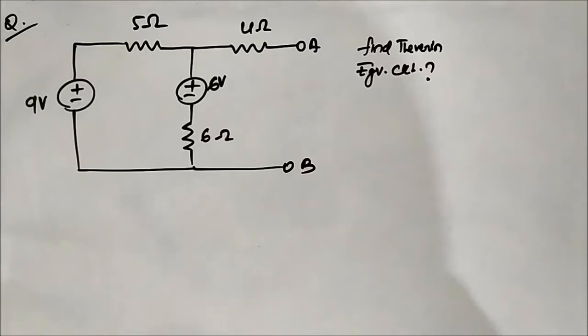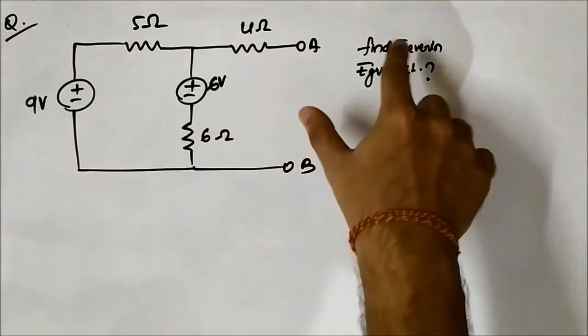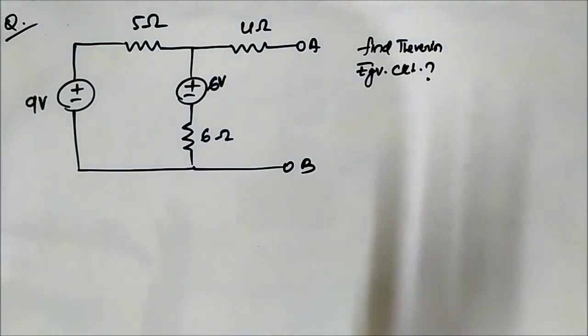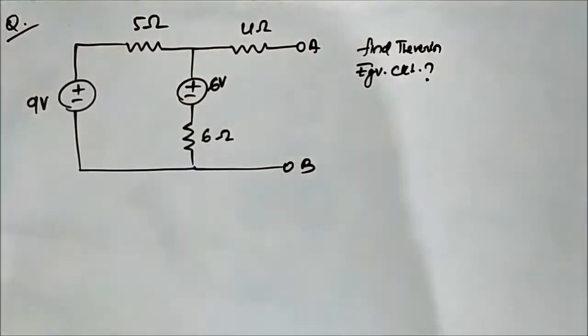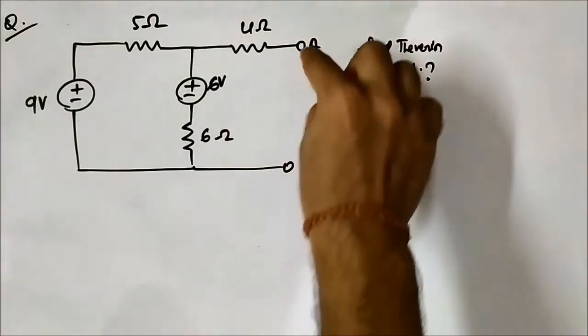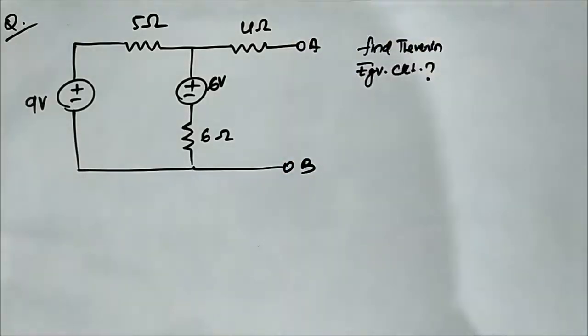In the next few questions we will do the opposite. Here we are going to find the Norton equivalent circuit and from that we will find the Thevenin equivalent circuit. So we have this circuit and we have to find the Thevenin equivalent across the terminals A and B.